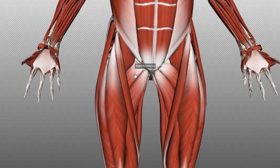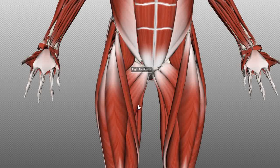First, I'll talk about the boundaries of the triangle. Laterally, you've got the medial border of the sartorius. Medially, you've got the medial border of the adductor longus muscle. And superiorly, you've got the inguinal ligament.